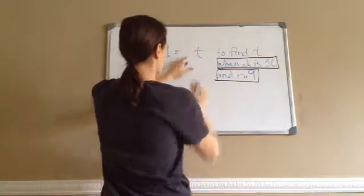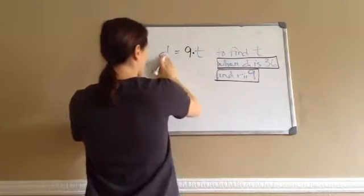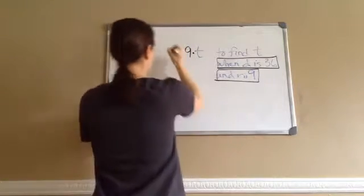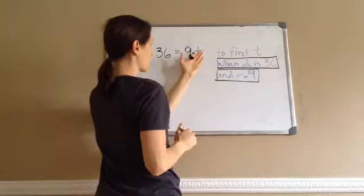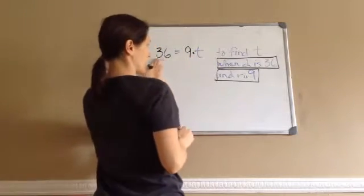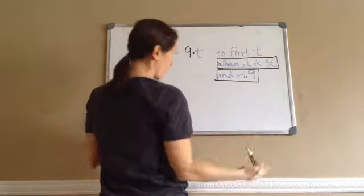R is 9. I'm going to want to put 9 times T, since we know that that's that. And what they say D was, D is 36. So, now, the problem is 9 times what equals 36? And because we're answering for T, we know that 9 times 4 is 36.